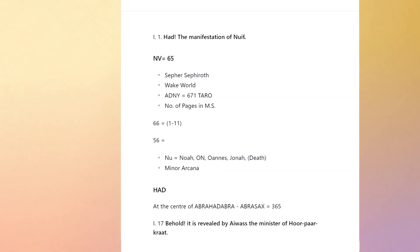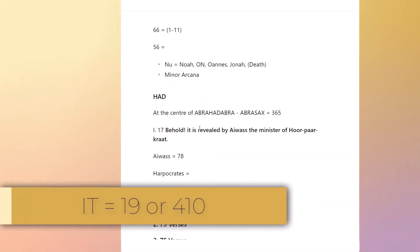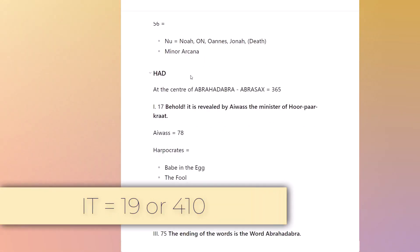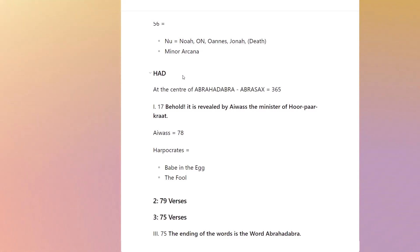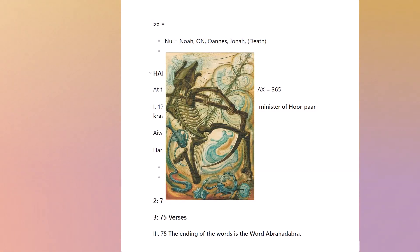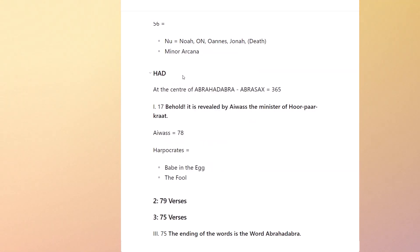We had 'Had — the manifestation of Nuit.' He did Nuit first: Nu equals 65. Then he goes on to Had. The idea is 19, which is the number of the Sun card. He makes the point that Had — we remove the YT from Nuit and Hadit and end up with Had. And of course Had is at the center of Abra-Hadabra, which is the 11-lettered name mentioned by Eliphas Levi as well.